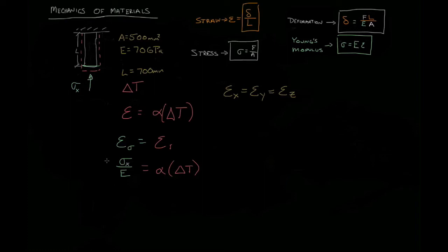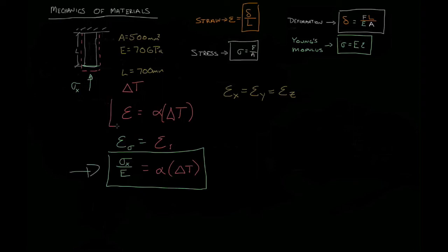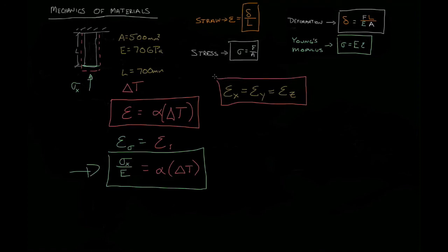This is a slight twist on a superposition principle that allows us to understand how stresses develop in constrained geometries when the temperature changes, and this occurs often enough that it's worth noting. In summary, there is a strain associated with the change in temperature — it's simply alpha, the coefficient of expansion for that material, times the change in temperature — and that strain is the same in every direction.